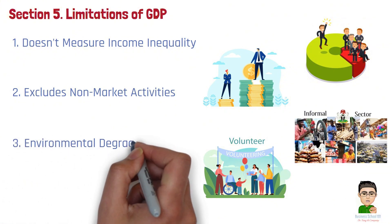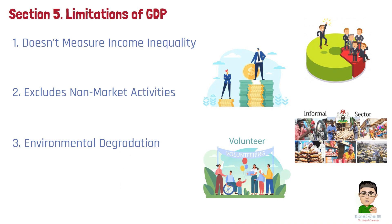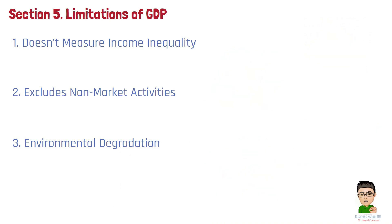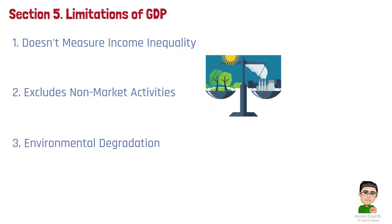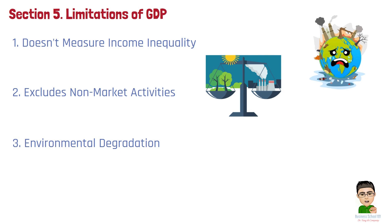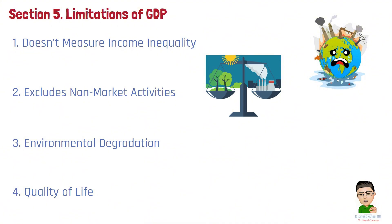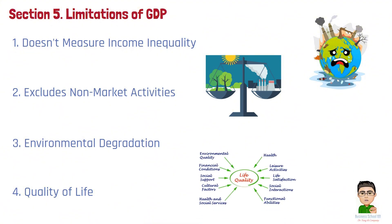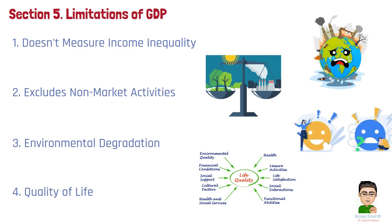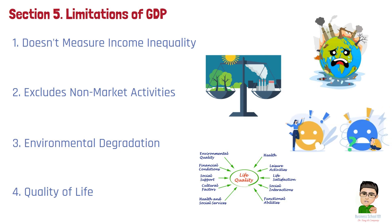Number 3: Environmental Degradation — GDP measures economic output but not the environmental costs of that production. For example, activities that contribute to pollution or resource depletion may increase GDP in the short term but have long-term negative effects that GDP doesn't account for. Number 4: Quality of Life — GDP per capita provides some insight into standard of living, but it doesn't measure quality of life factors like happiness, health, or education. Countries with similar GDPs may have very different levels of public well-being.